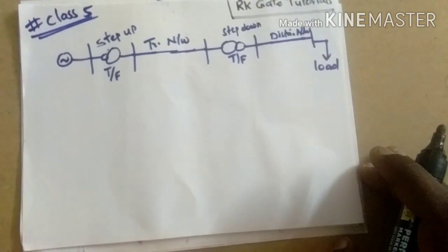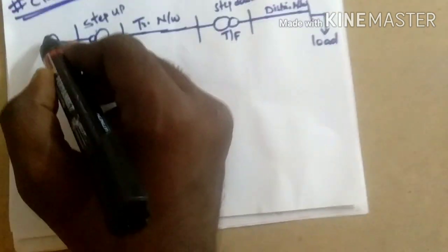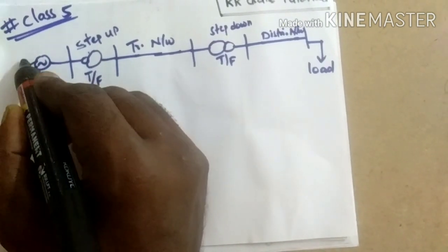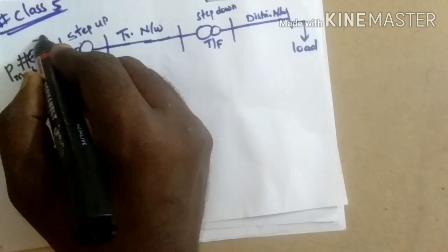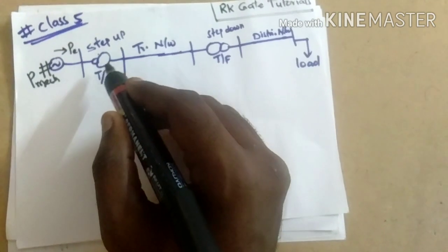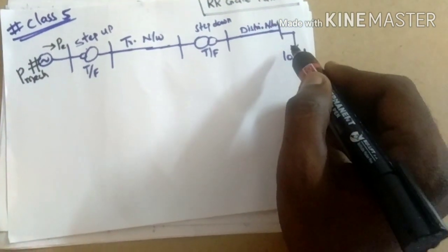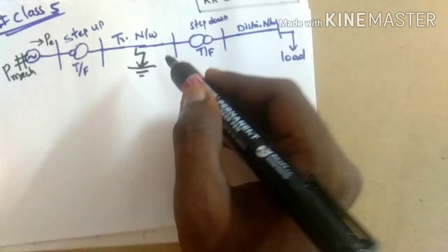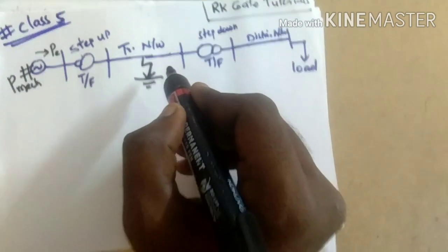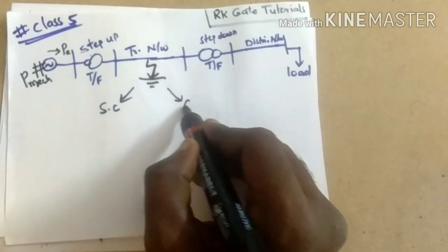Before that I would like to analyze the two faults once again — a small glance at the previous classes. This is a complete power system. The synchronous generator is driven by a prime mover which produces mechanical power and electrical power. That has been stepped up and transmitted through the transmission network, then stepped down and distributed to the utility load. Faults may take place in the transmission network — either open circuit faults or short circuit faults.